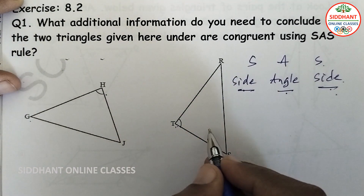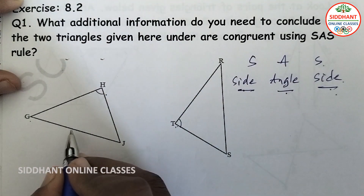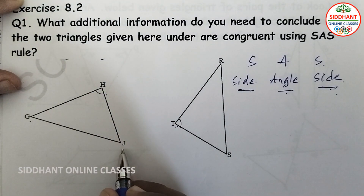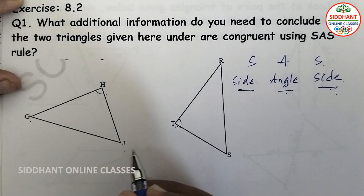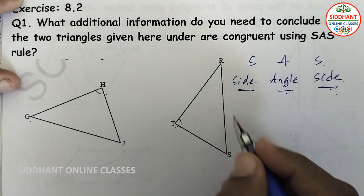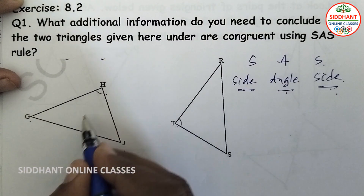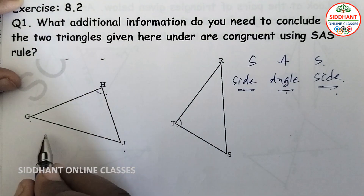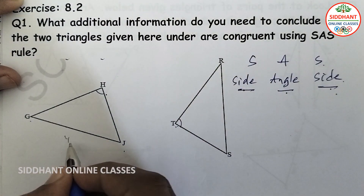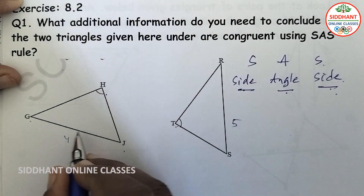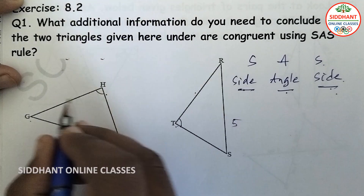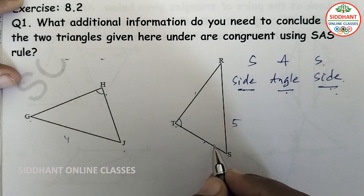The measurements of the sides are also not given. We cannot say GJ is equal to RS — it may be 4 cm or 5 cm. Neither the angle measurements nor the side dimensions are provided, so we cannot yet apply the SAS rule.